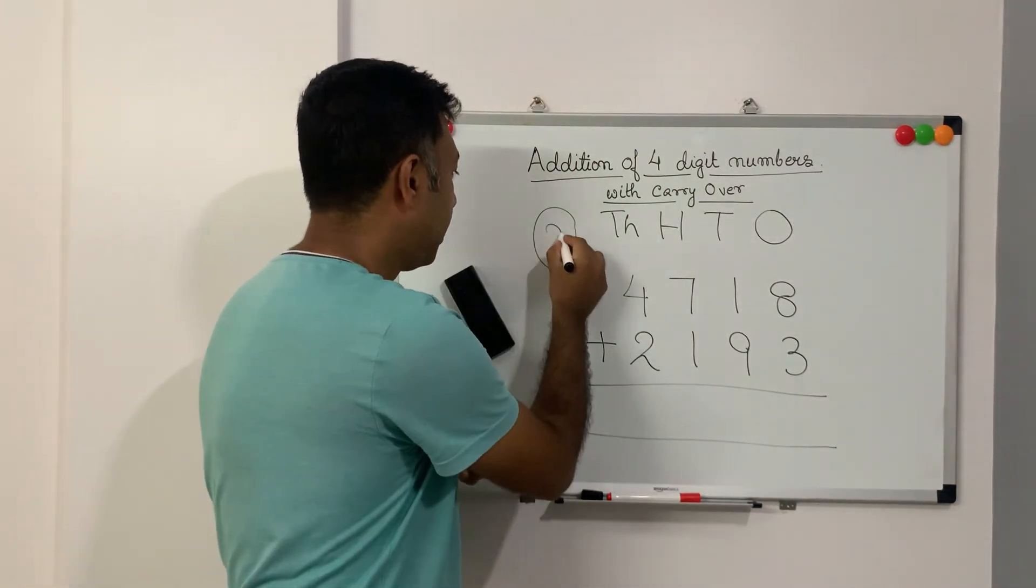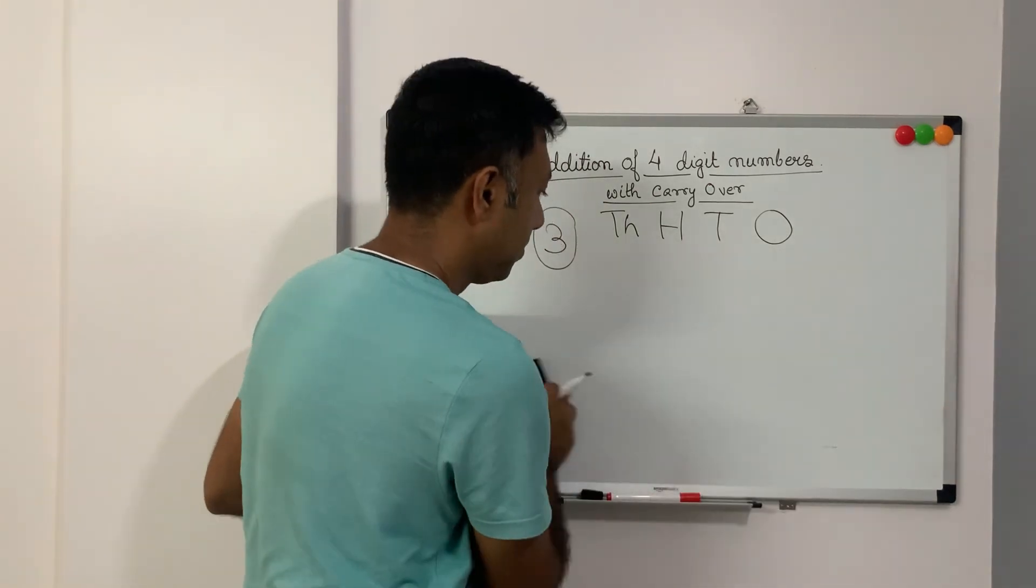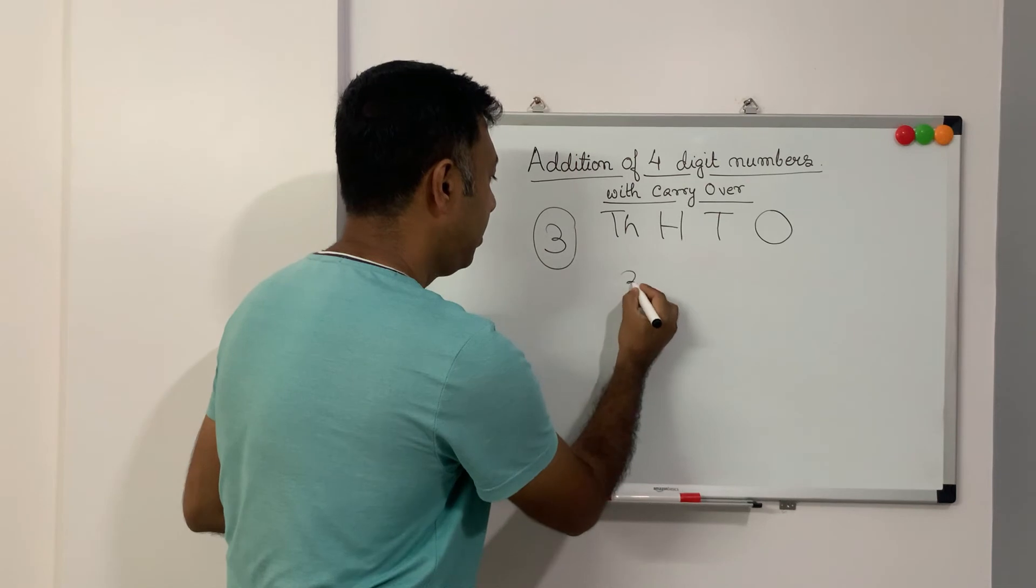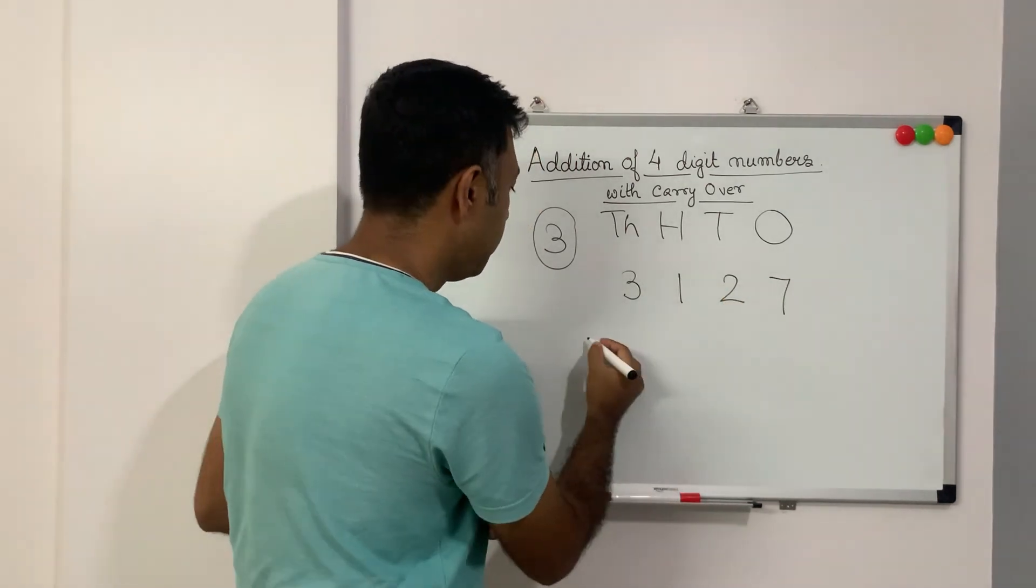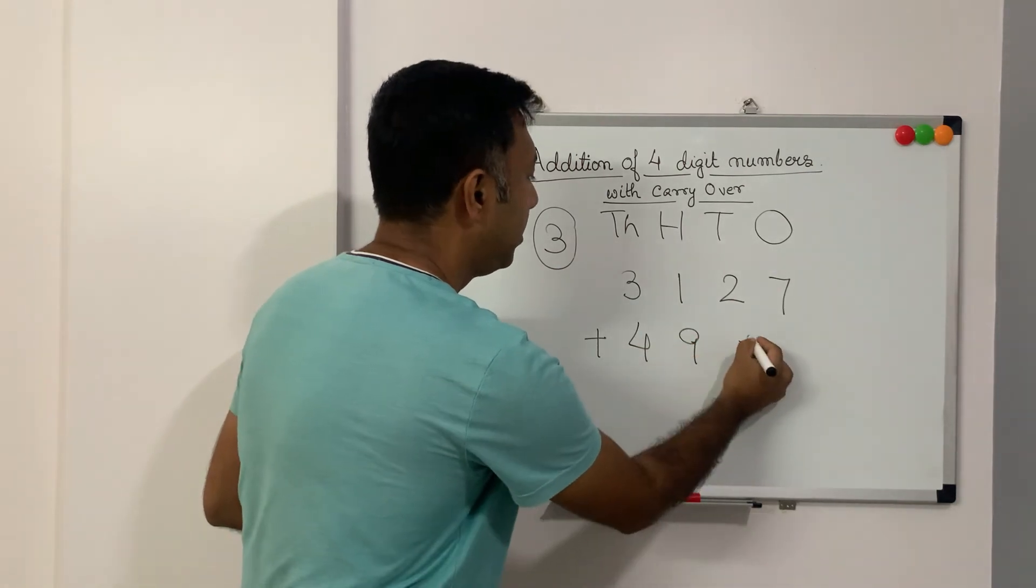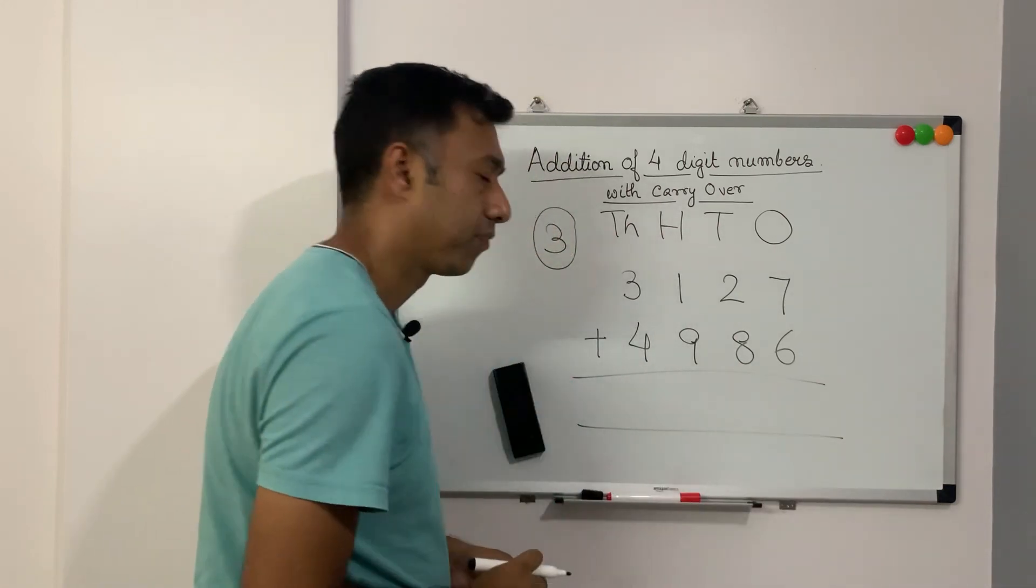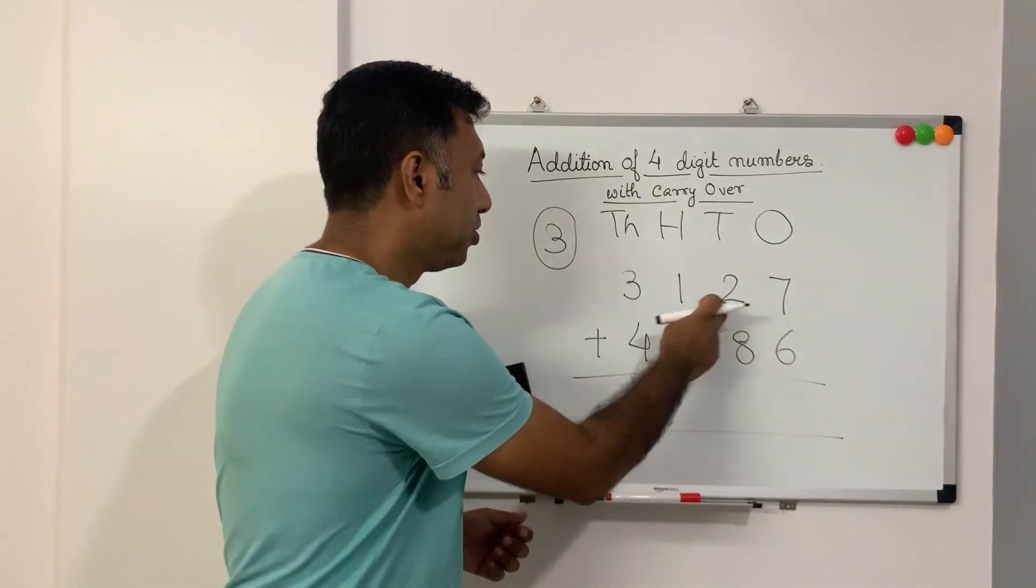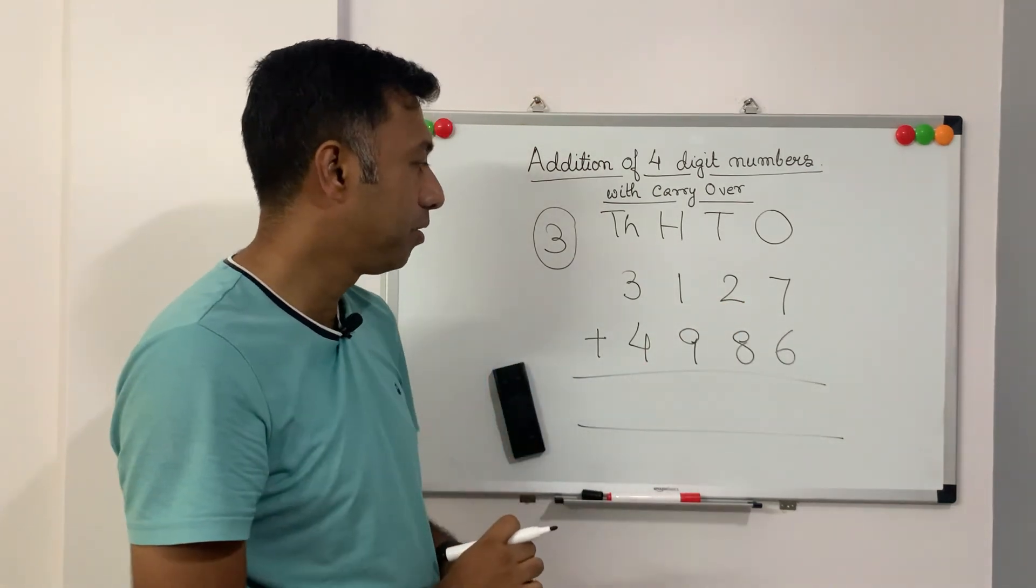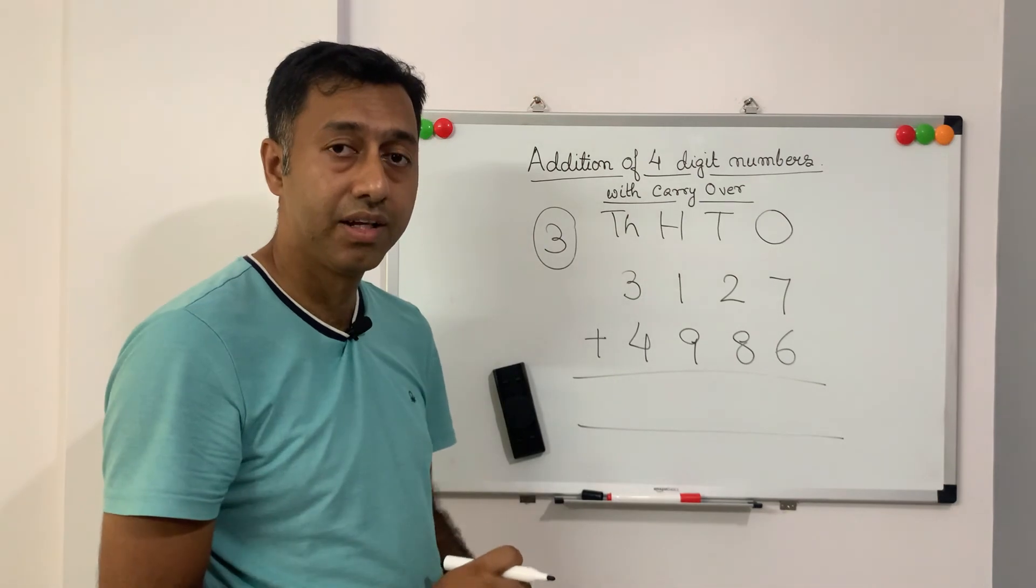Let's take the example. Another homework. Okay. It is 3127 plus 4986. This is your third problem. Right. So do these additions. 3127 plus 4986. And you can compare the result in the description.